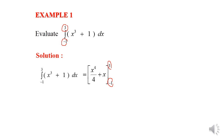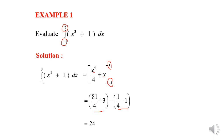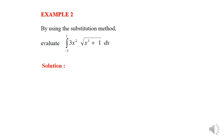We substitute negative 1 and 3 for x. When we substitute 3, we get 81 over 4 plus 3. When we substitute negative 1, we get 1 over 4 minus 1. Our final answer is 24.